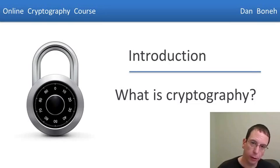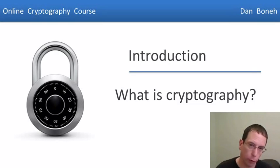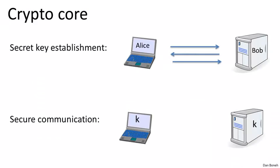Before we start with the technical material, I want to give you a quick overview of what cryptography is about and the different areas of cryptography. The core of cryptography is secure communication, which essentially consists of two parts: secure key establishment, and how to communicate securely once we have a shared key.